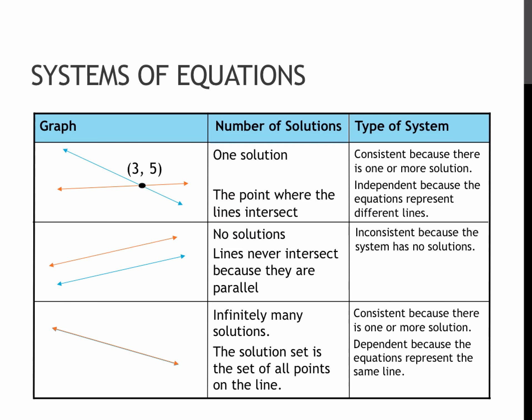When we solve a system of equations, whether it's by graphing or by any of the other methods that we'll explore throughout this week's lessons, there are really three options. There is one option where you would have the two lines that would cross at exactly one point. And whatever that one point happens to be, that would be the solution to the system.